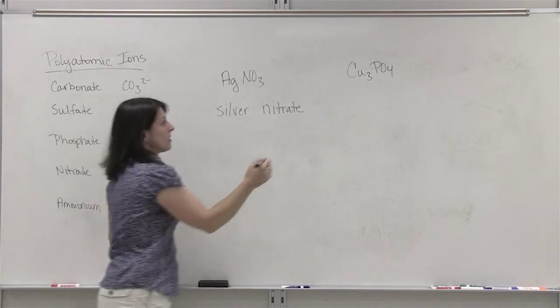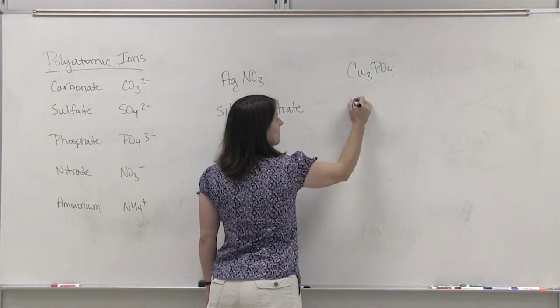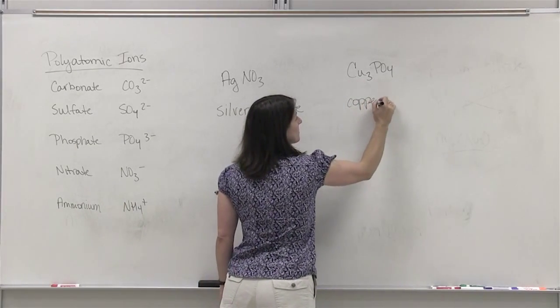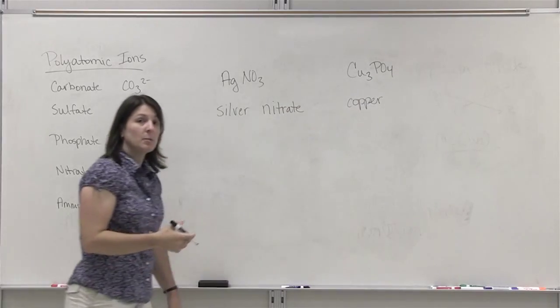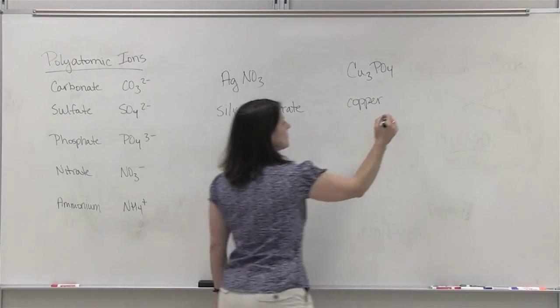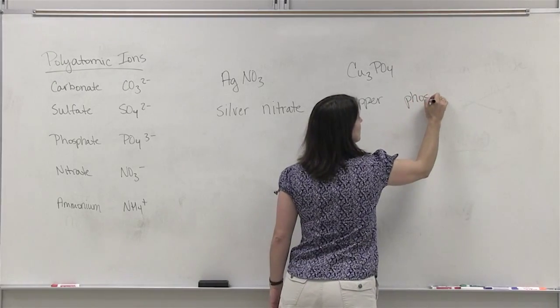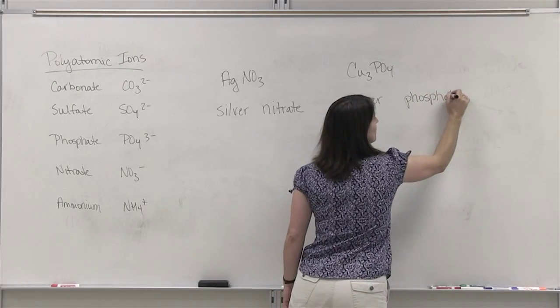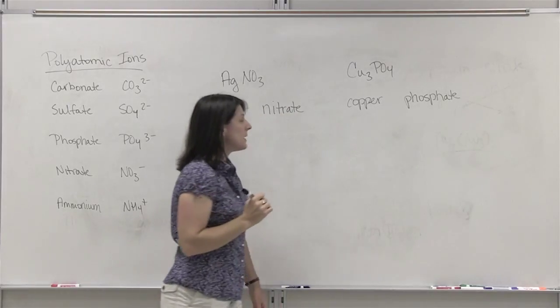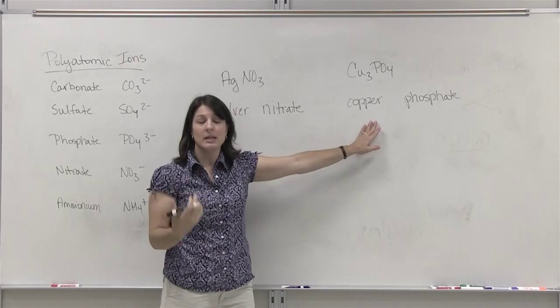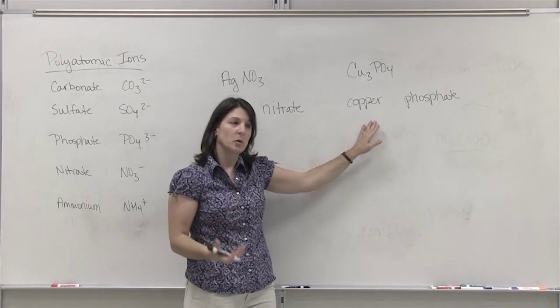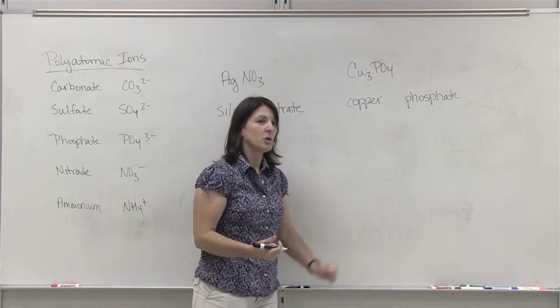Cu3PO4. The first element is copper. The second portion, PO4, is the polyatomic group phosphate. So we write its name. Now, something special about copper. It is a transition metal, so it requires a Roman numeral to indicate its charge.